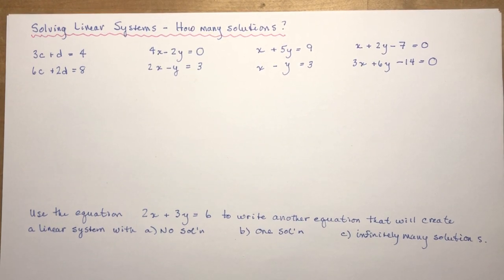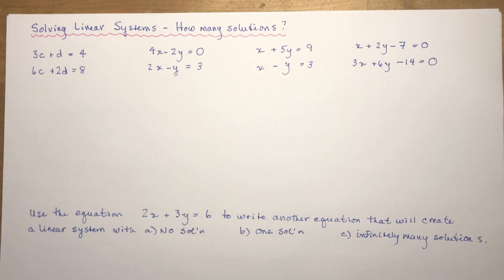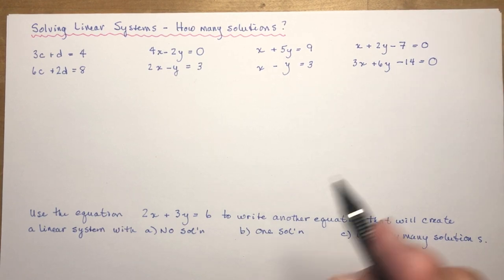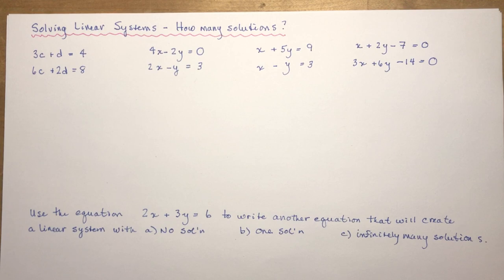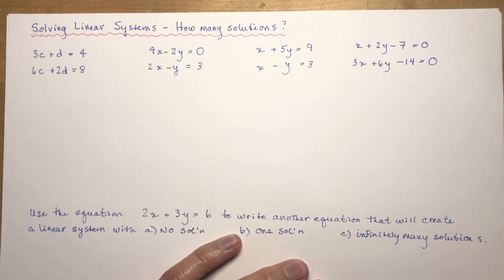Solving linear systems - this time we're going to look at how to determine how many solutions there will be just by simply looking at the system of equations. This happens to be the last topic in solving linear systems in the Nelson book, section 1.7. We've solved using graphing, substitution, and elimination, and now we want to know just by looking at them how many solutions there will be.